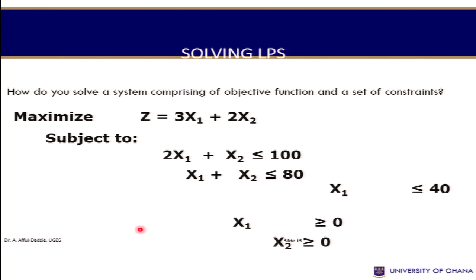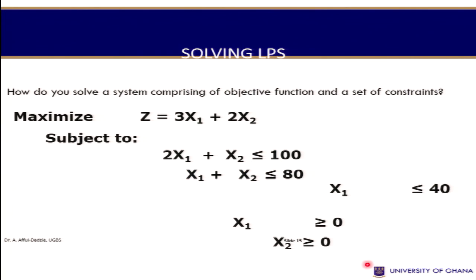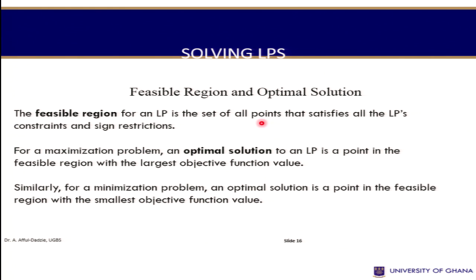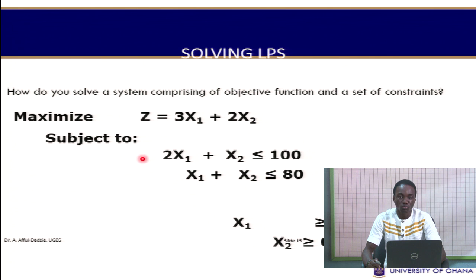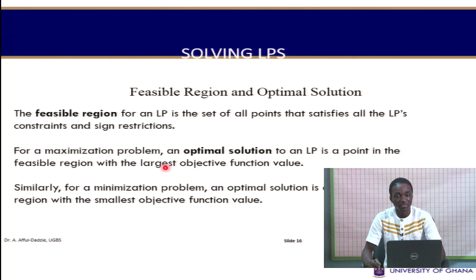Once a model is formulated, how do we solve it? There are various ways: the graphical solution, the simplex method, and the computer solution. In this session, we focus on the graphical solution. A feasible solution or feasible region is the set of all points that satisfies the linear programming constraints and sign restrictions — any point of X1 and X2 that satisfies all three constraints.